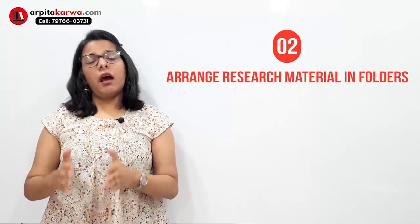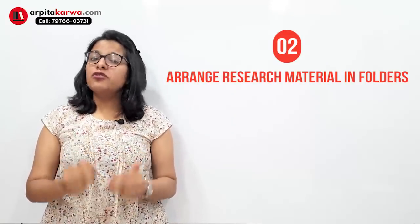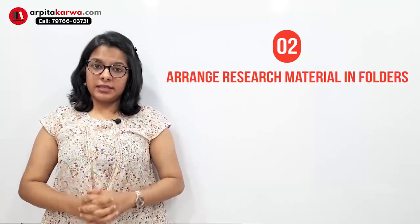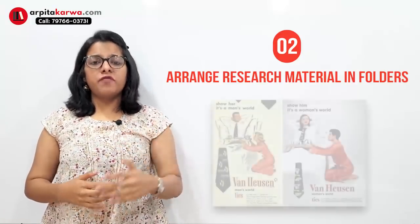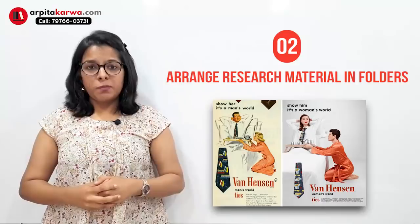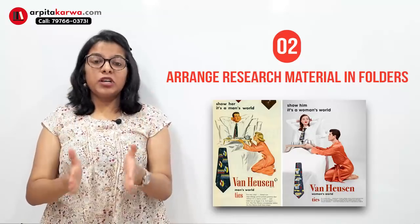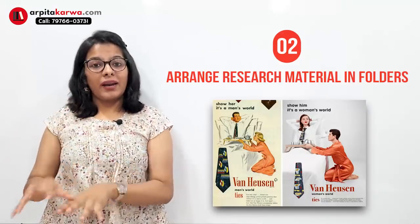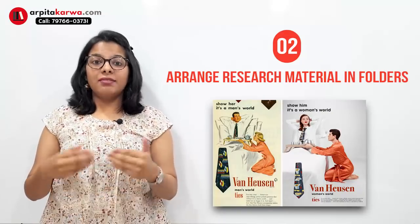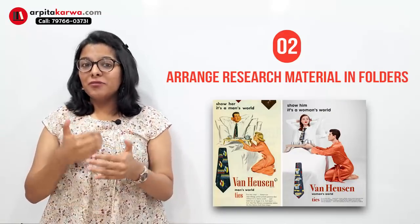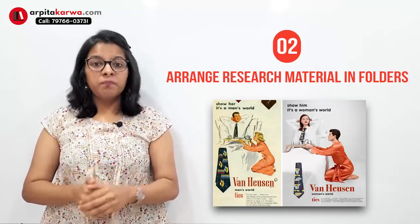The next important thing to remember is organizing your material. A PhD takes around three years to complete, and during that time you will be reading a lot of material. I have seen students working on feminism who come across a newspaper or television advertisement they want to quote, but while writing the research they forget to mention the source and their research gets rejected because of plagiarism.